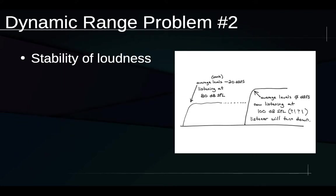There's a second problem, which has to do with the stability of loudness. Let's say our average levels are at about minus 20 decibels full scale and we're listening at around 80 decibels SPL — a comfortably loud level. If later in the signal the average levels go up by 20 decibels to around 0 decibels full scale, we can predict we'll now be listening at 100 decibels SPL, which is really too loud to be safe or comfortable.